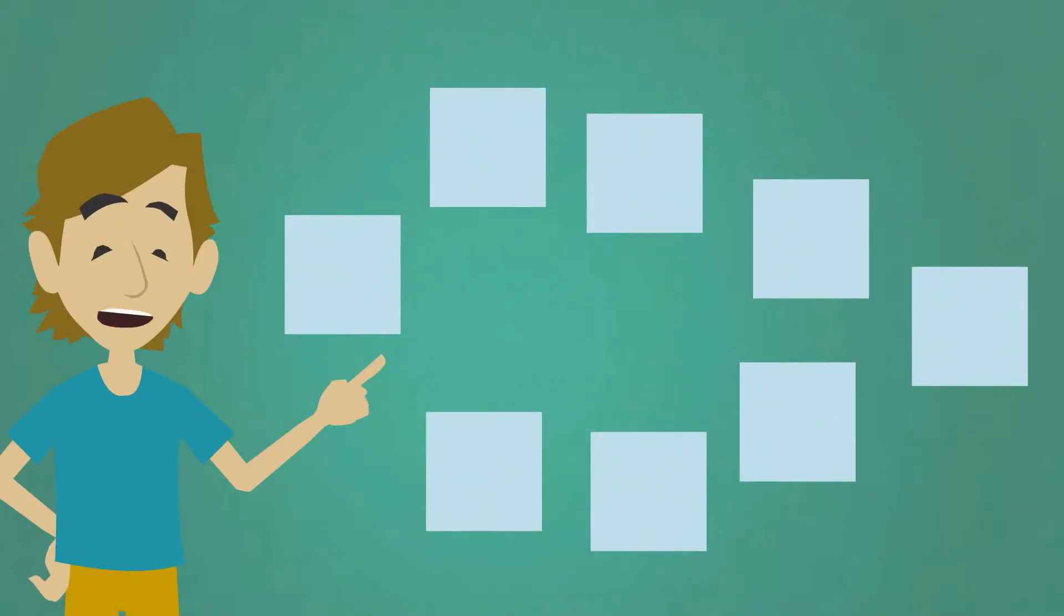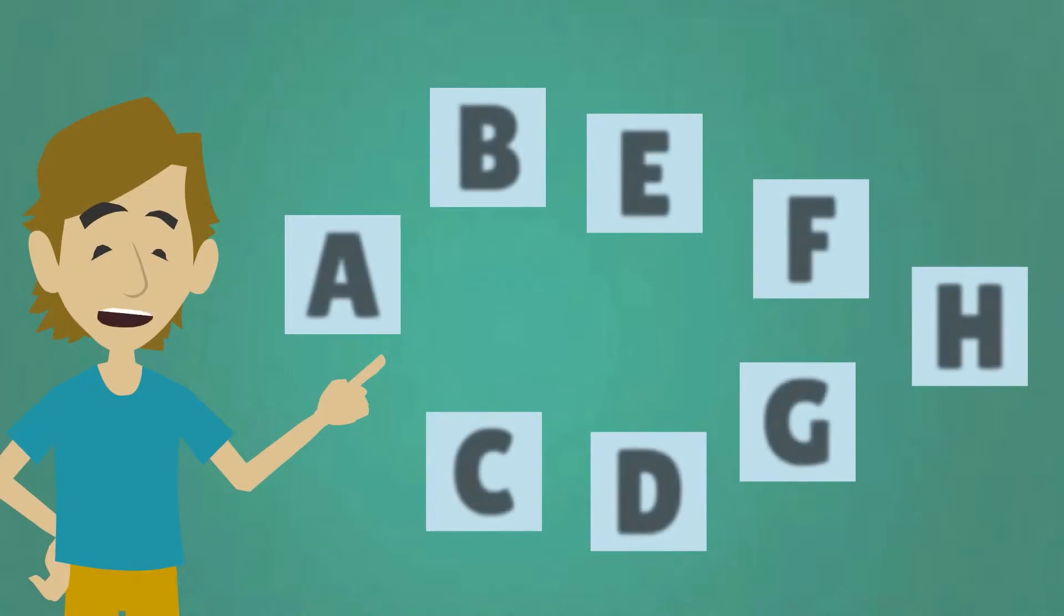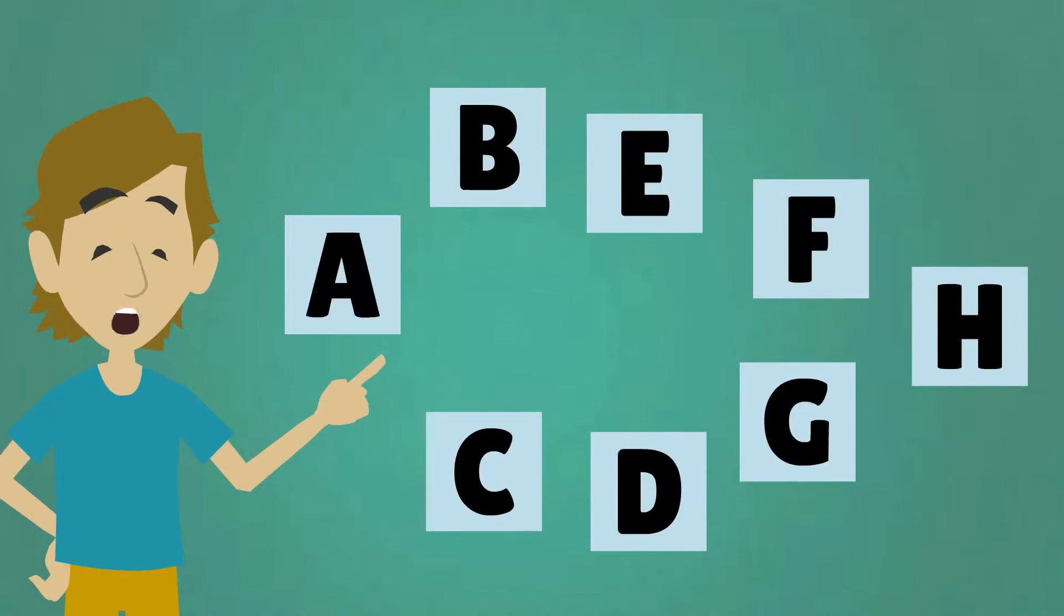In our example, there are eight activities that need to be completed in order to finish the project. Activity A is the start of the project and with activity H the project is finished. All activities are dependent on each other.